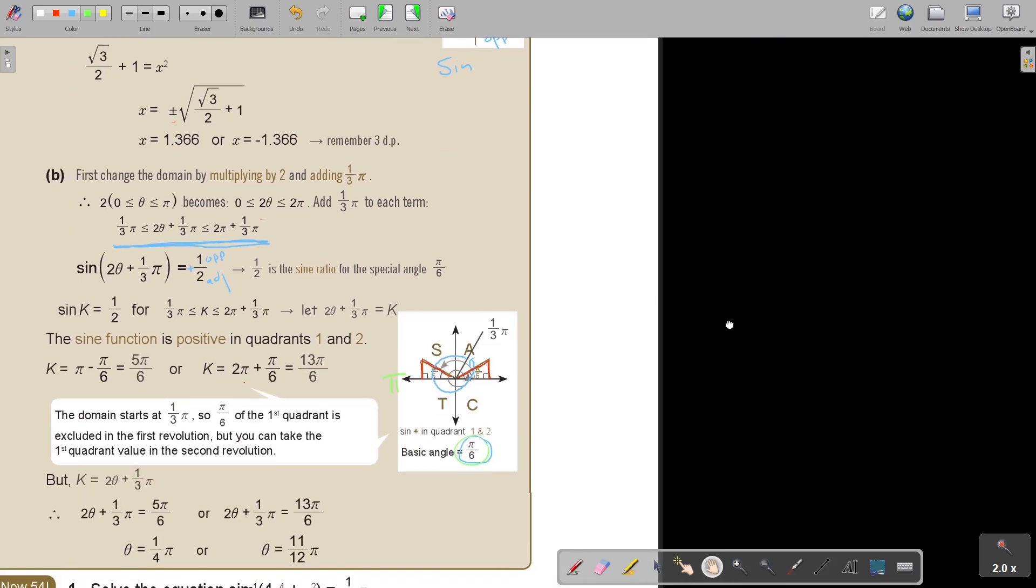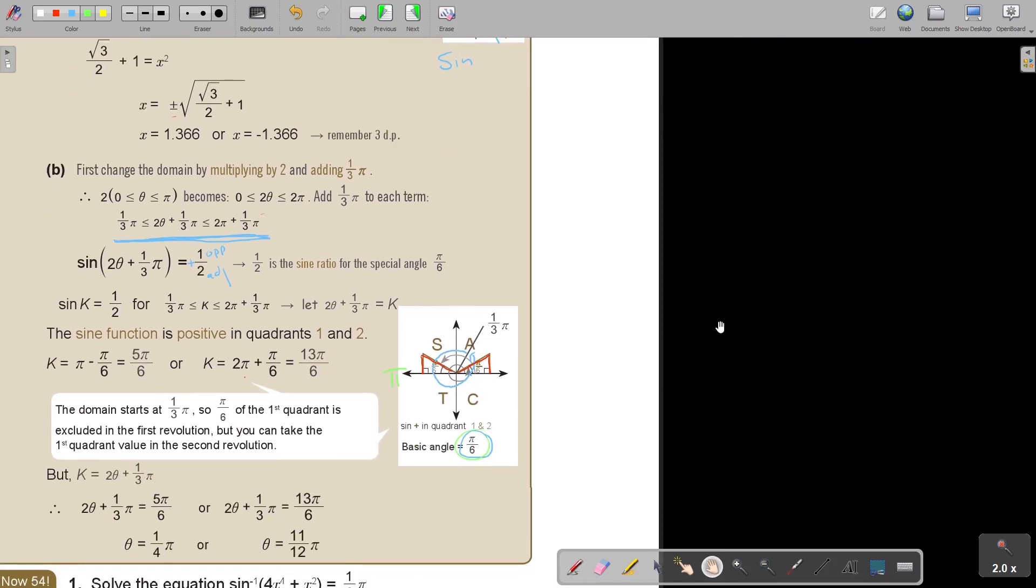But now I'm not finished. I must replace k because remember what is k, 2 theta plus a third pi, this is k. So I replace k there. Now I just simplify. I take this one over, I subtract, and then I divide by 2 and I get my answer. We just work with the numbers.